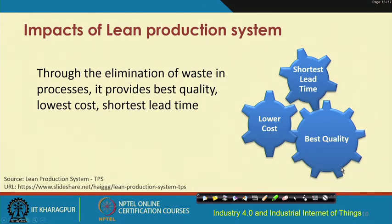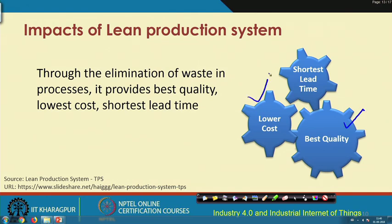The impact of adopting a lean production system includes: products of the best quality, produced at lower cost, and with the shortest production time. These are the three key impacts of lean production.